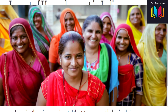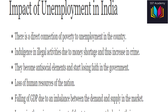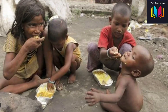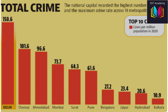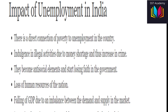Less participation of women in the workforce. Impact of Unemployment in India: There is a direct connection of poverty to unemployment in the country. Indulgence in illegal activities due to money shortage and thus increase in crime. People become anti-social elements and start losing faith in the government. There is also loss of human resources of the nation and falling of GDP due to an imbalance between demand and supply in the market.